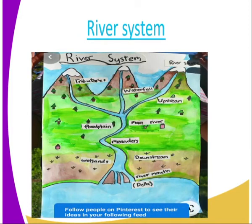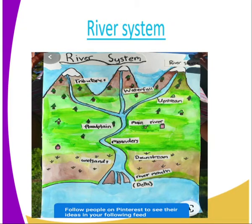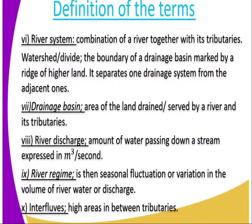We have talked about the river system. A river system covers from the tributaries and the source to the mouth. The tributaries join the main river, and then it continues to distributaries and then the mouth. A river system is the combination of a river together with its tributaries.